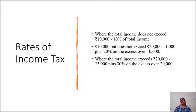Rates of Income Tax applicable to a cooperative society for the assessment year 2020-21 are as follows. Where the total income does not exceed rupees 10,000, the tax is 10% of the total income. Where the total income exceeds 10,000 but does not exceed rupees 20,000, the tax is rupees 1,000 plus 20% on the excess over 10,000.